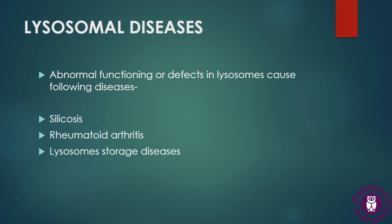Dysfunctioning or defects of lysosomes cause many diseases, collectively called lysosomal storage diseases. Other diseases include silicosis and rheumatoid arthritis. Silicosis occurs mainly in industrial workers working in silica-related areas, where the lungs are infected and hydrolytic enzymes of lysosomes cause damage. In rheumatoid arthritis, an inflammatory disease of body joints, lysosome enzymes are released into the extracellular space and cause damage, because lysosomal hydrolytic enzymes are highly acidic and capable of digesting cells and cellular organelles.